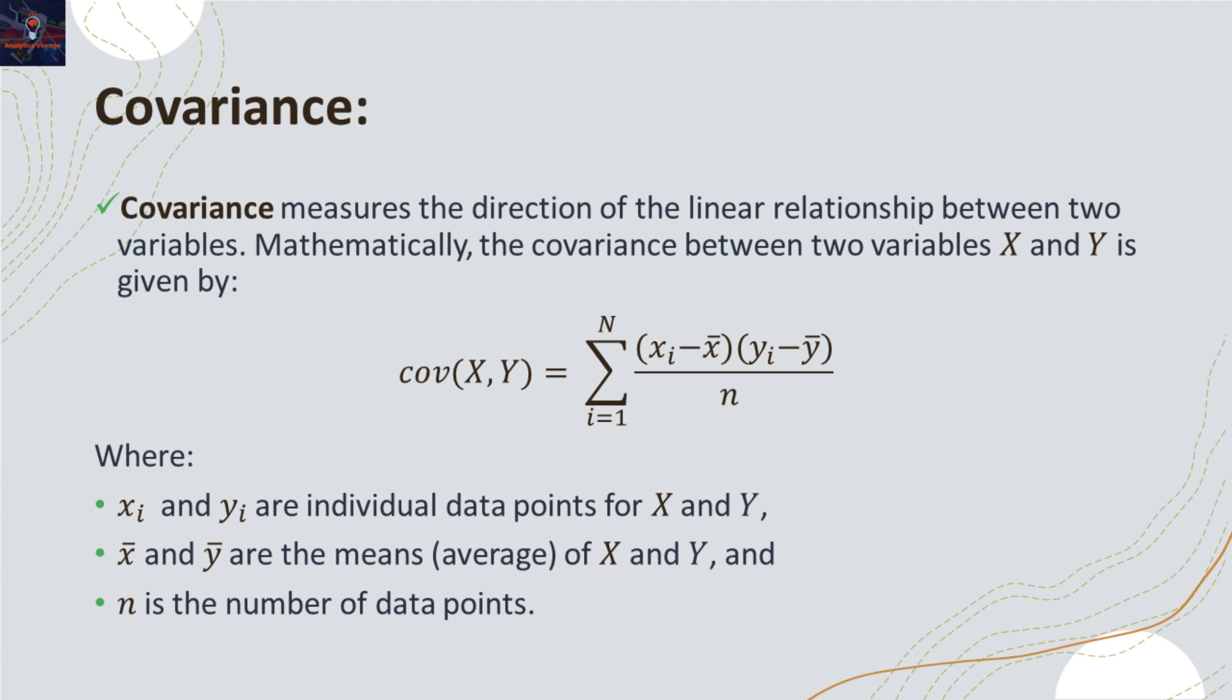Covariance itself, without taking its absolute value, is a measure of direction of the linear relationship between two variables.